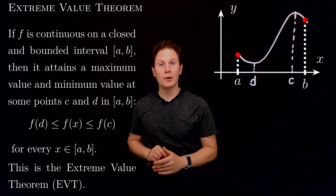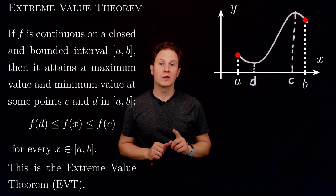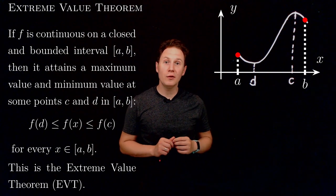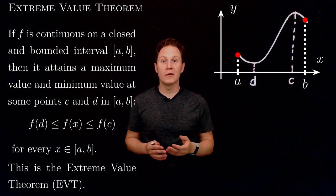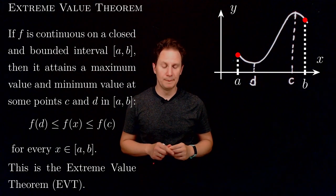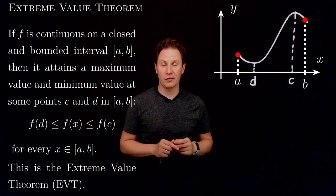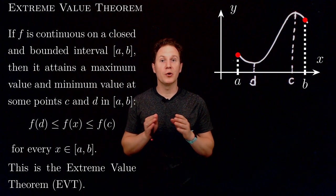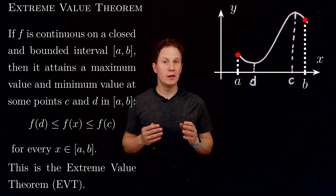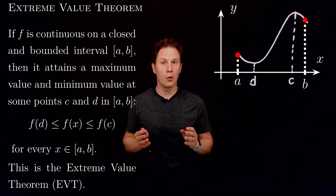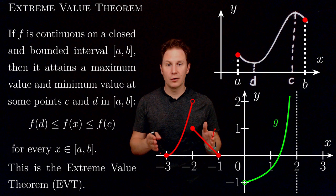This is the Extreme Value Theorem, which we sometimes shorten to EVT. Two remarks: first, the theorem doesn't actually tell you how to find c and d — it only tells you that they exist, so this is an example of an existence theorem. Second, both conditions in the theorem are necessary: the function f being continuous and the interval a, b being closed are both crucial.